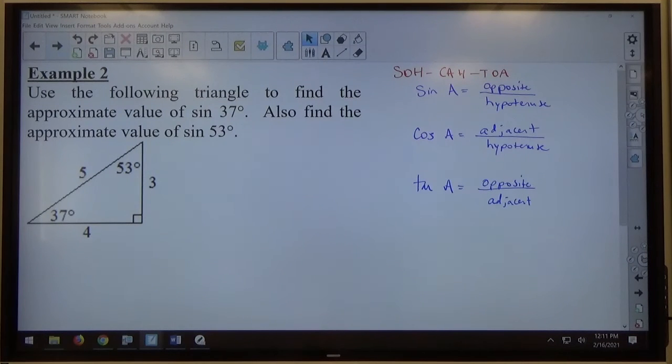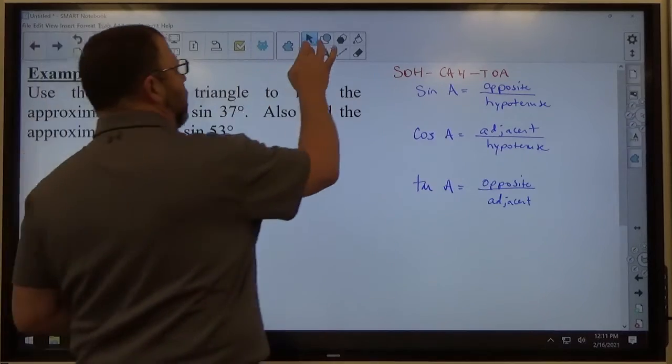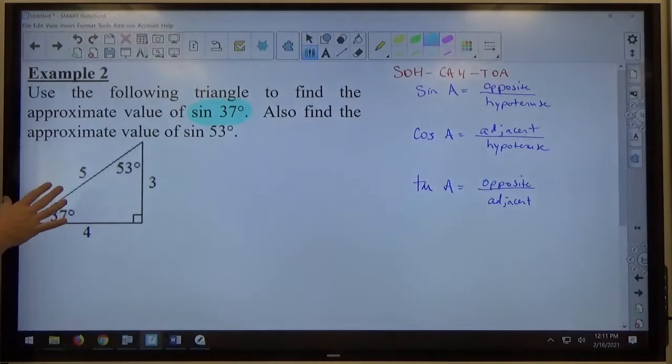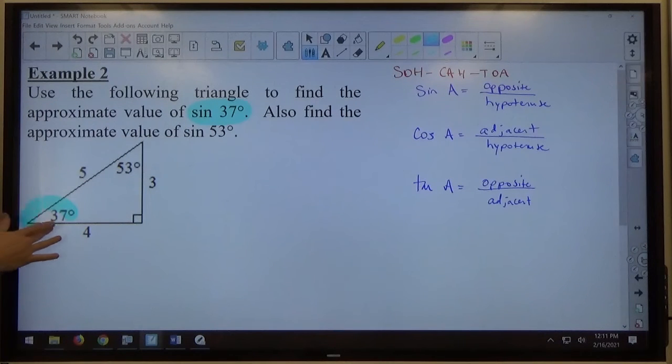Alright, so if I'm trying to do the sine of 37, let me start with that. That's what it's asking me to do, sine of 37. First thing I want to do is identify my 37 degree angle.